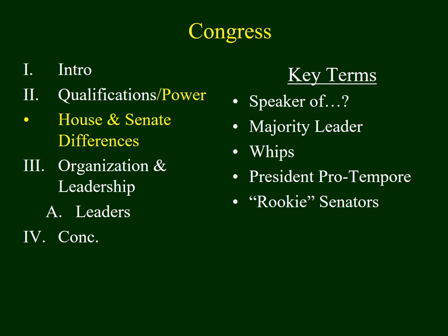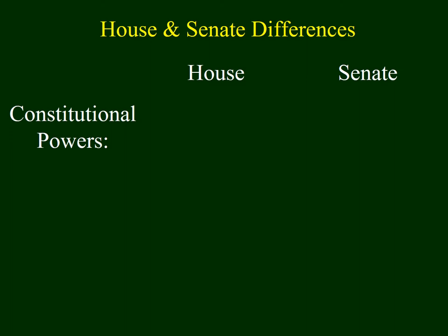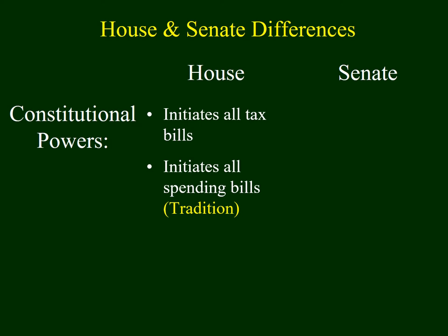Now let's explore the constitutional powers of the House and the Senate. The Constitution gives special powers to each chamber. The House of Representatives has the authority to initiate several things. First, the House initiates all tax bills — every time there's a tax increase or tax cut, that bill must start in the House. Based upon tradition, all spending bills are also initiated in the House. Additionally, the House has the sole power of impeachment, initiating the removal process.